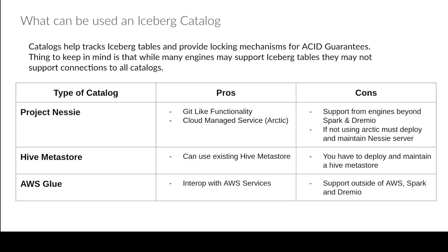Since it's open source, you have the option to set up your own server. You can also use a Hive Metastore - this is a good option if you already have one running. You'd have all your Hive tables benefiting from the Hive Metastore, and in that same metastore you can track the metadata.json pointers so your engines can figure out where your Iceberg tables are. That way you don't have to worry about deploying an additional service. If you don't have a Hive Metastore, I'd probably explore Project Nessie instead of deploying a Hive Metastore just to use it as an Iceberg catalog.